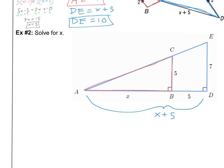I know that 5 corresponds to 7, so I set up the proportion: 5 over 7 equals X over (X plus 5). The common mistake here is to just put 5 in the denominator instead of the whole distance X plus 5 — that would give you the wrong answer. You have to use the whole distance.